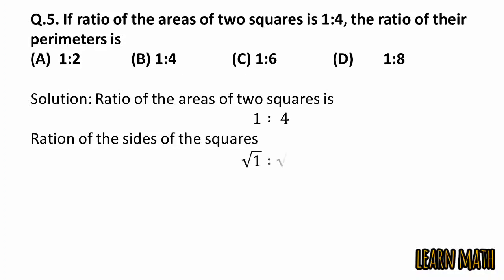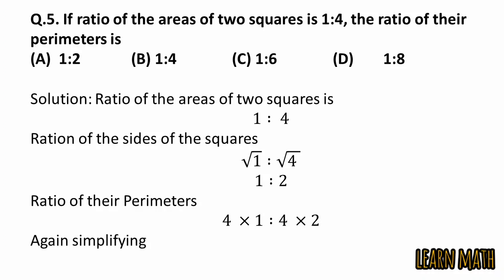To find the ratio of their perimeters we need to find the sides of the square. By taking the square root of the area we can get sides of the squares, that is 1 ratio 2. To find the perimeter we need to multiply by 4, so 4 into 1 ratio 4 into 2. But simplifying again we will get 1 ratio 2, and the correct option is option A.